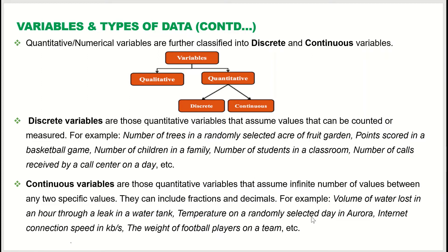Temperature on a day is an example of a continuous variable. Internet connection speed in kilobytes per second changes and can take all decimal values, so that is also continuous. Weight of a football player on a team can be decimal values — not just 72 or 73 pounds — so that is another example of a continuous variable.